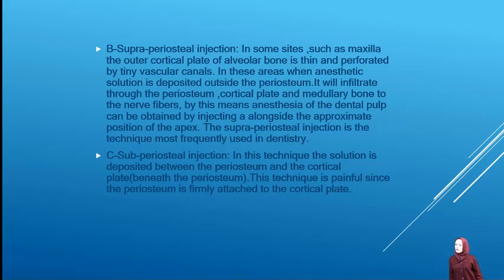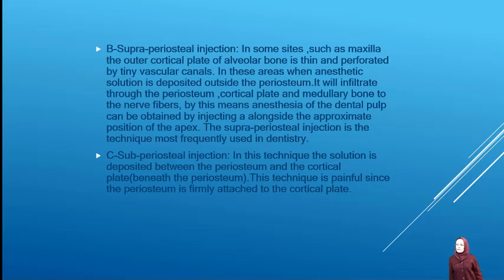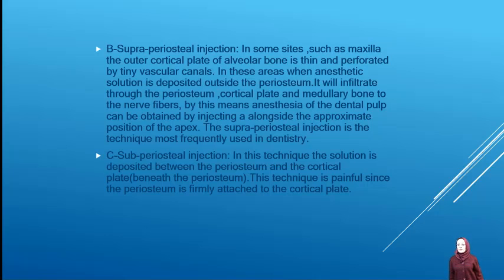Subperiosteal injection: in some sites such as the maxilla, the outer cortical plate of the alveolar bone is not perforated by vascular canals. In these areas, when a local anesthetic solution is deposited outside the periosteum, it will infiltrate through the periosteum, the cortical plate, and the medullary bone to the nerve fibers. By this means, anesthesia of the dental pulp can be obtained by injection alongside the approximate position of the apex.